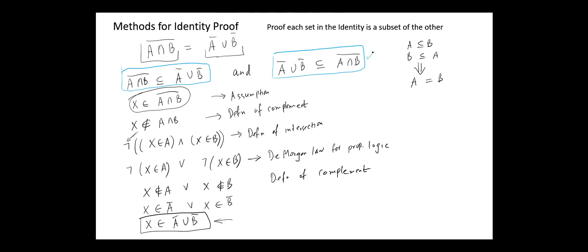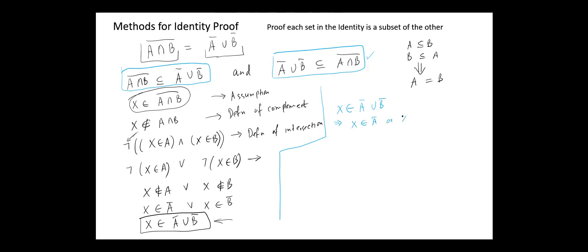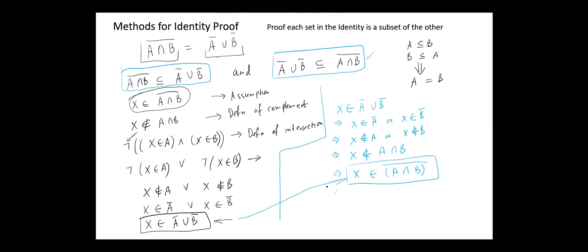Now we have to prove the second part. Suppose X belongs to (not A union not B). This implies X belongs to not A or X belongs to not B, which also implies X does not belong to A or X does not belong to B, which implies X does not belong to (A intersection B), i.e., X belongs to the complement of (A intersection B). By combining these two results, we get that the complement of (A intersection B) equals (not A union not B).